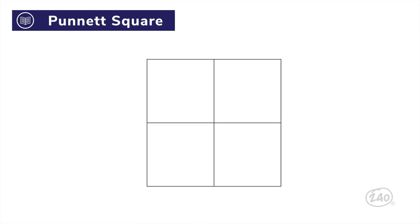To create one for a single trait, draw four boxes in a two-by-two arrangement. We'll write one parent's genes above the squares, putting one allele above each column. Then we'll write the second parent's genes to the left of the squares, putting one allele to the left of each row. In the case of pea plants, purple flowers are a dominant trait and white flowers are a recessive trait.